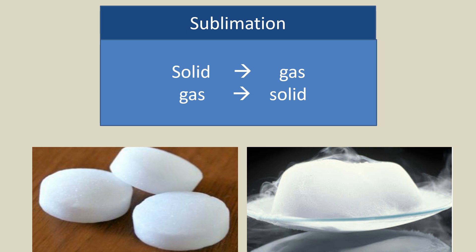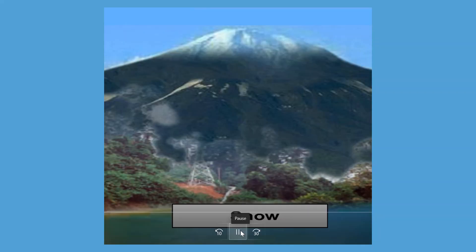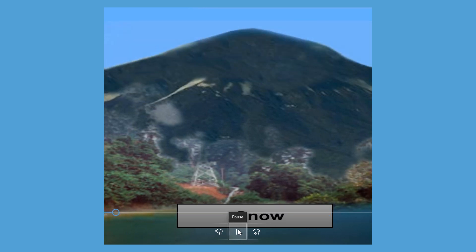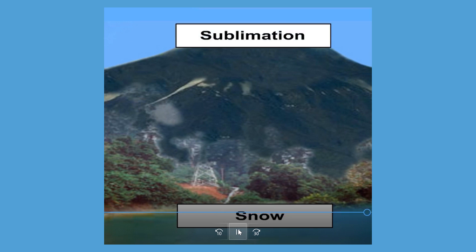Next, let's learn about sublimation. What is sublimation? Sublimation is a process where solid turns into gas, or gas turns into solid. Look at the snow on top of a mountain — we know that snow melts under the sun. But can snow disappear without melting? Yes! Snow can change directly into its gaseous state through the process of sublimation.